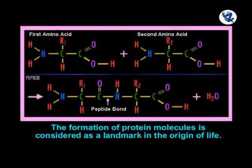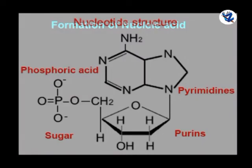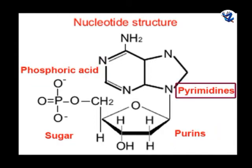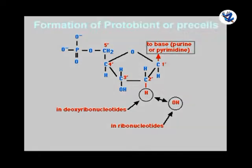The formation of protein molecules is considered as a landmark in the origin of life. Formation of nucleic acid: It was formed by aggregation of phosphoric acid, sugar, purines and pyrimidines. They were linked in various combinations to form different types of nucleotides.